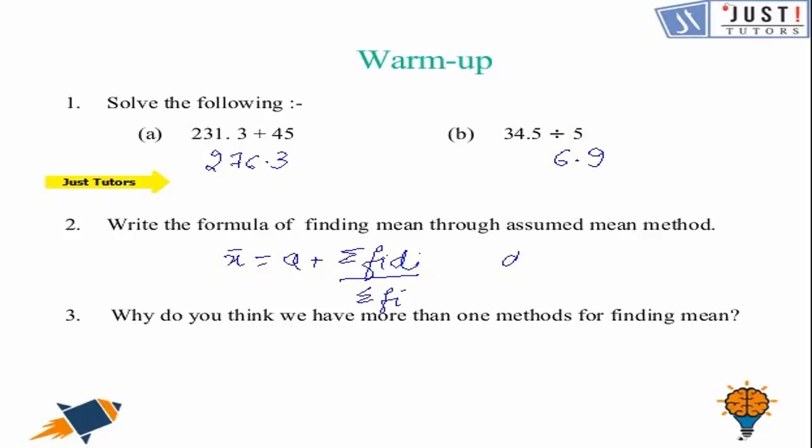Where a is the assumed mean and di is equal to xi minus assumed mean.